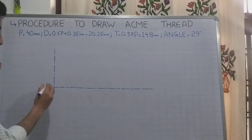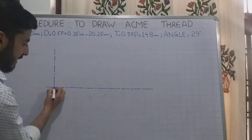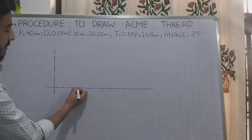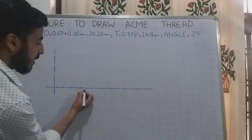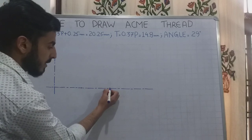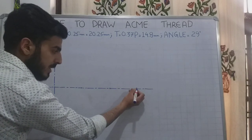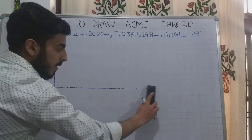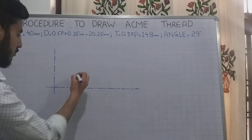From this point, I mark pitch distances. The pitch is 40mm. I mark 40mm from this point, then again 40mm from that point, and again 40mm. Where I have marked, I will draw vertical center lines.